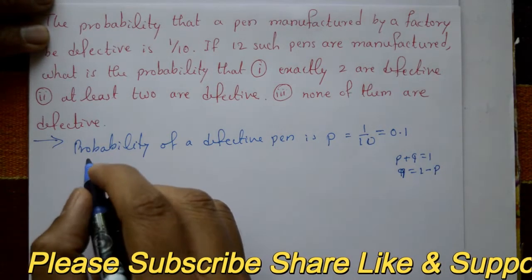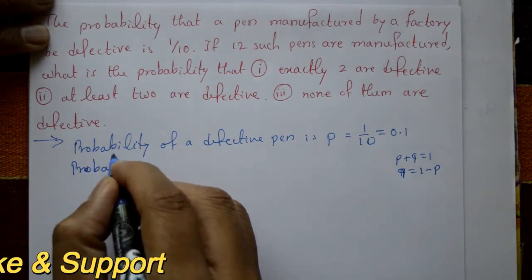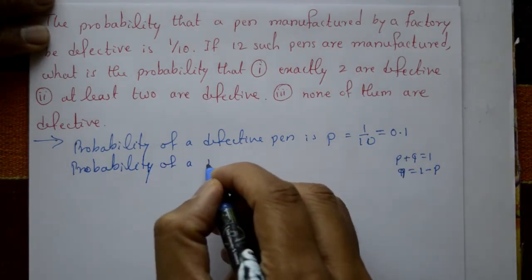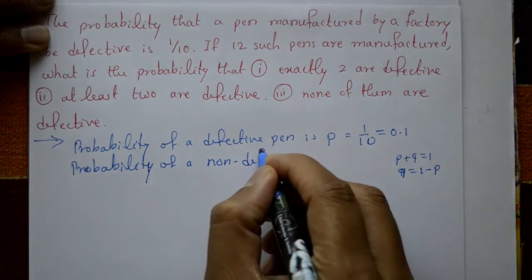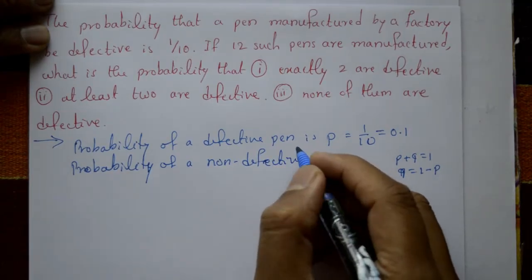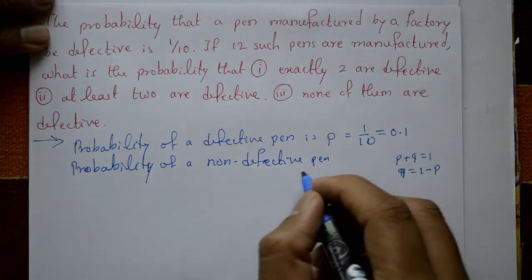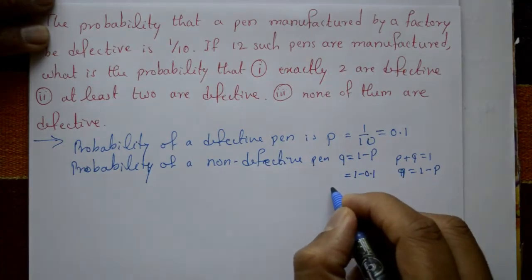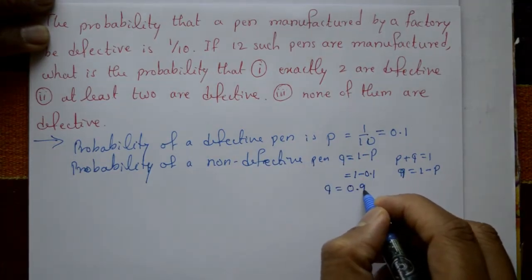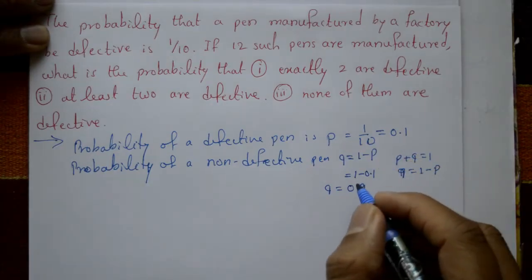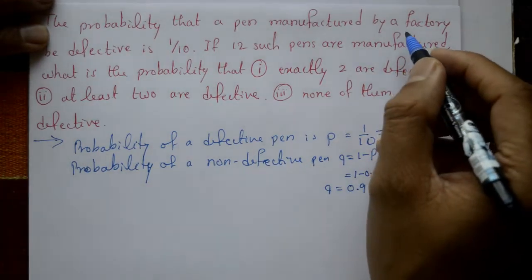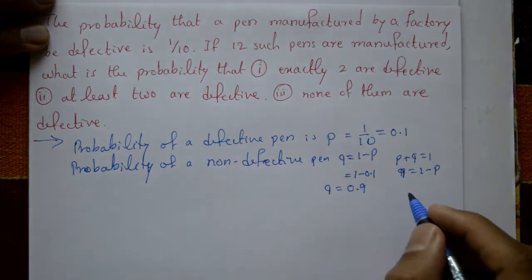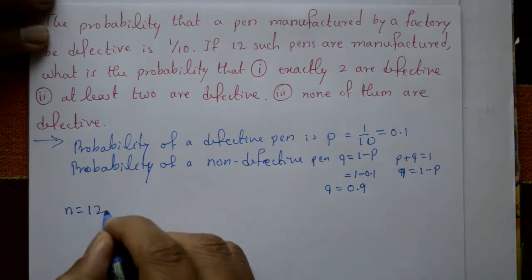The probability of a non-defective pen is q equals 1 minus p, which is 1 minus 0.1, so q equals 0.9. Here, p = 0.1 is defective and q = 0.9 is non-defective. Since 12 such pens are manufactured, n equals 12.